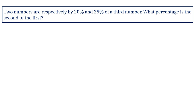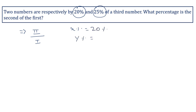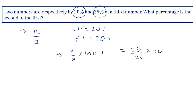Two numbers are respectively 20 percent and 25 percent of a third number. What percentage is the second of the first? Here second is compared with the first, so in the numerator put the value of second and in the denominator put the value of first. x percent equals 20 percent and y percent equals 25 percent. Using the formula y upon x into 100 percent: 25 upon 20 into 100, cancelling the zeros gives 125 percent. So 125 percent is the second of the first.